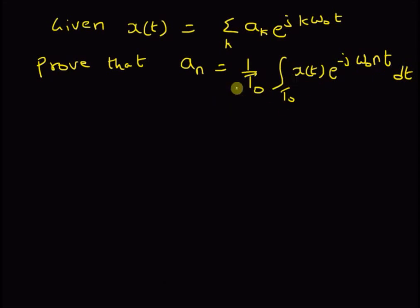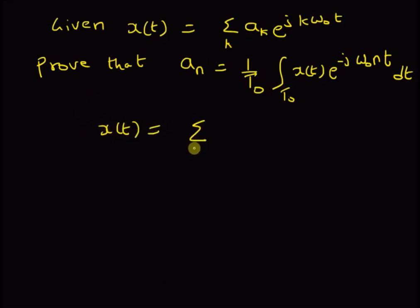So the Fourier coefficients are given by this integral. Starting with the given definition, that is, x(t) is equal to the summation over k of aₖ multiplied by e^(jkω₀t).